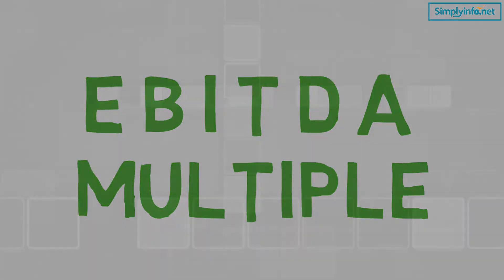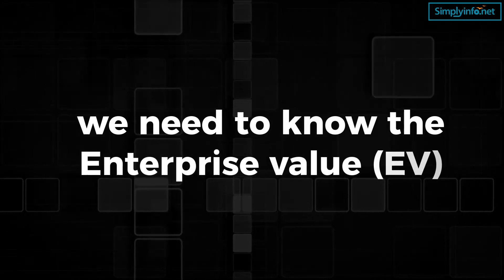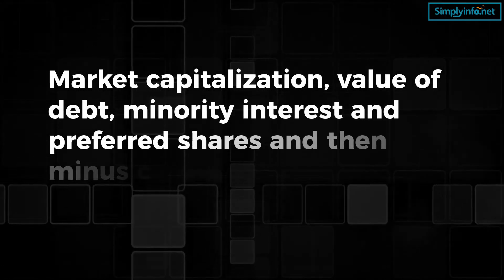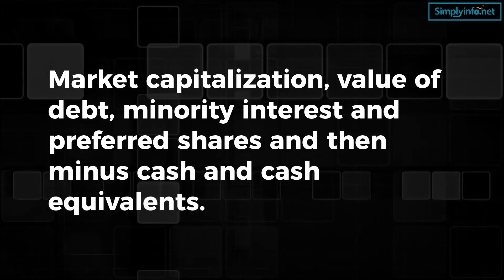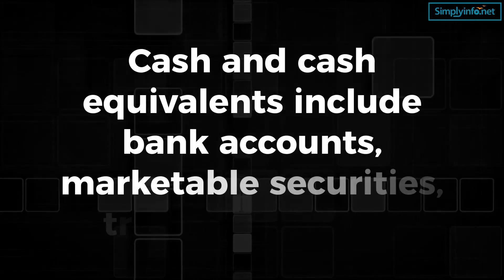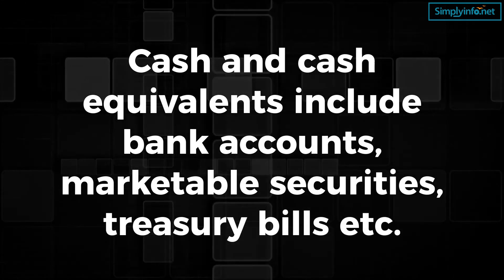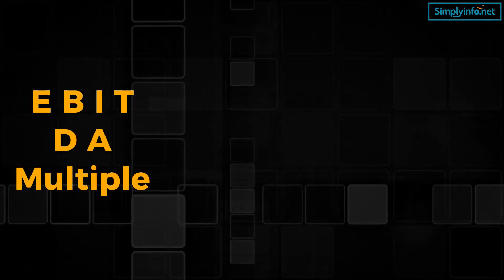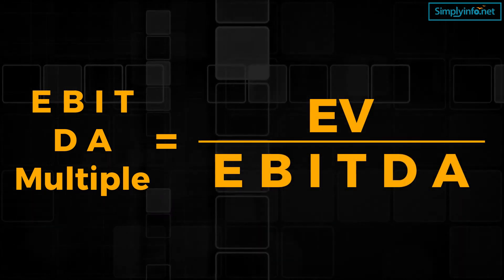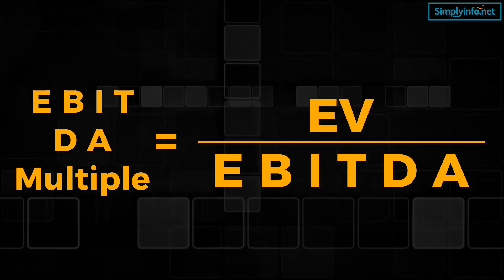EBITDA Multiple: To get the EBITDA multiple, we need to know the Enterprise Value (EV). This is calculated by finding the sum of market capitalization, value of debt, minority interest, and preferred shares, then minus cash and cash equivalents. Examples of cash and cash equivalents include bank accounts, market securities, and treasury bills. The formula is: EBITDA Multiple = EV ÷ EBITDA. This multiple ratio indicates whether the company is either overvalued or undervalued.